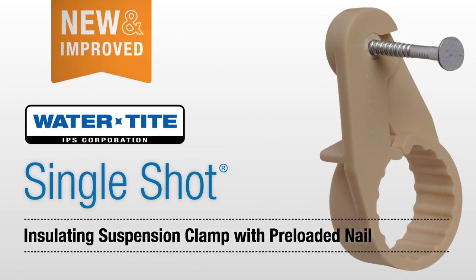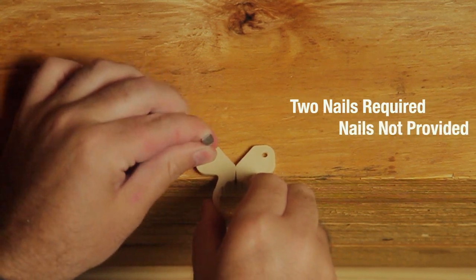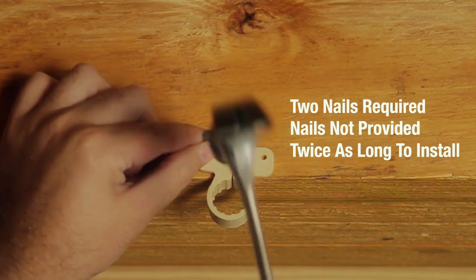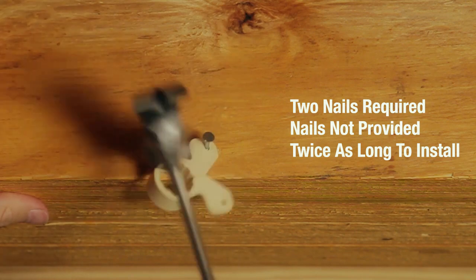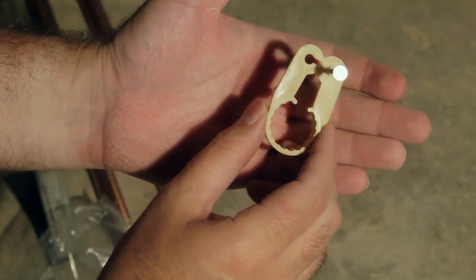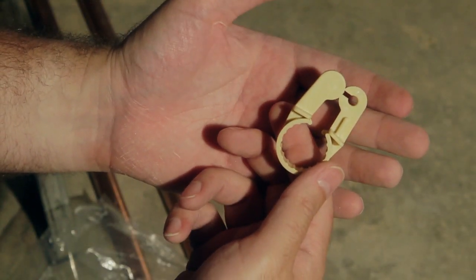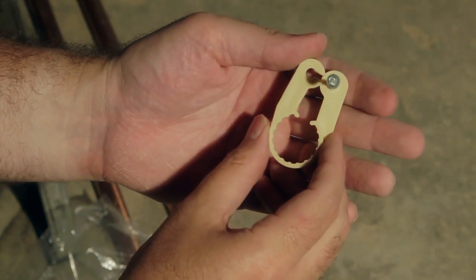You're familiar with the insulating suspension clamp which requires two nails that are not provided. Water-Tite improved upon that concept with the Single Shot Insulating Suspension Clamp, which includes a single preloaded nail and other features that lower the installed cost.